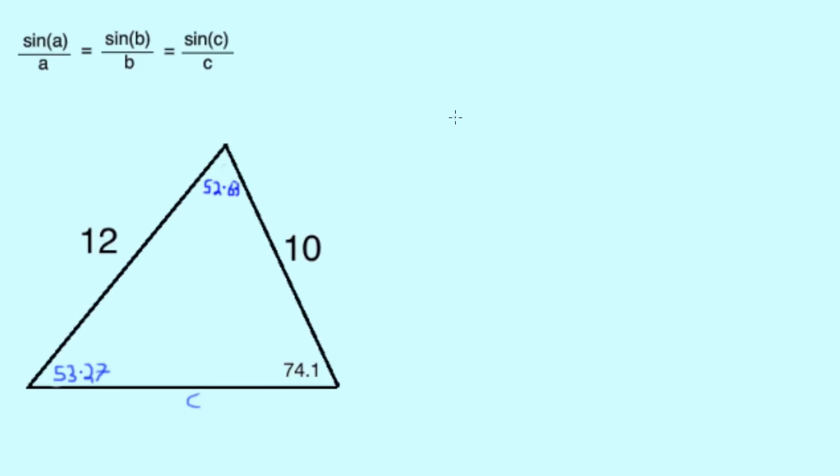Now, our final missing label is side C. So, looking at our rule, we know we have to write down sine C over C, and since we have our angle for C, we know that it's going to be sine 52.63 over our missing label C, which, from our sine rule, we also know is equal to sine A over A. So, sine 74.1 over 12.